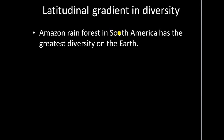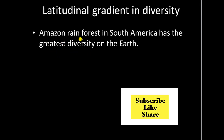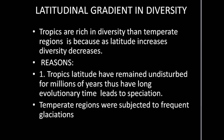The Amazon rainforest in South America, which is present in the tropical region, has the greatest diversity on Earth. The Amazon rainforest contains an enormous number of species, so the diversity is greatest there. You have to remember this — it is a frequently asked question.